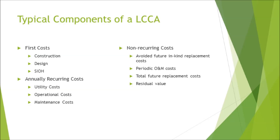Typical components of a Life Cycle Cost Analysis include first costs — construction, design, overhead, and project management — and annually recurring costs such as utility, operational, and maintenance costs. A very important category is non-recurring costs: they may recur, but not annually. These include periodic O&M costs, total future replacement costs, or residual value at the end of your LCCA period. We'll discuss how these are particularly important within an ECIP 1391 submission.